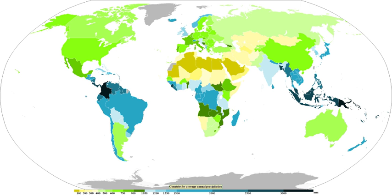Within METAR code, GR is used to indicate larger hail of a diameter of at least 6.4 mm. GR is derived from the French word grêle. Smaller sized hail, as well as snow pellets, use the coding of GS, which is short for the French word grésil. Stones just larger than golf ball size are one of the most frequently reported hail sizes.